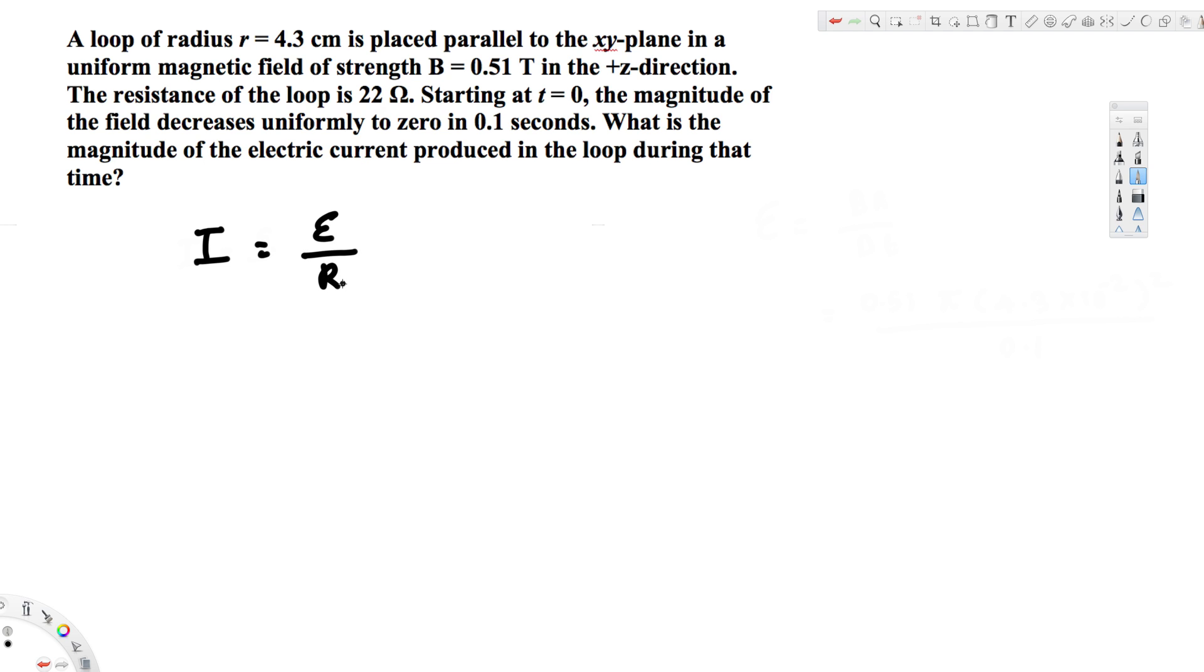divided by resistance. We have the resistance, but we need the emf. We can find the emf using emf = B × A / Δt. Since we're dealing with the area of a circle, this becomes